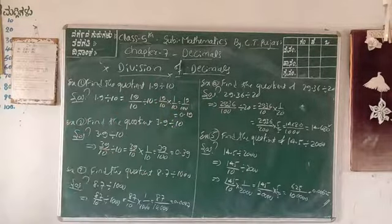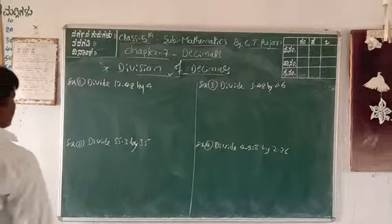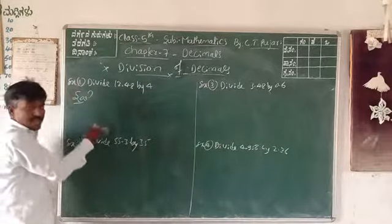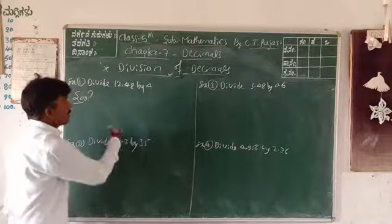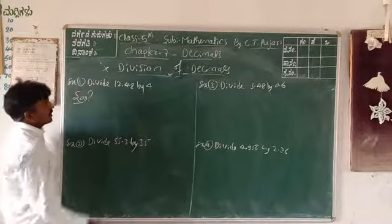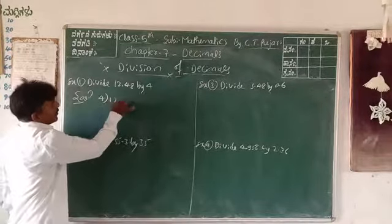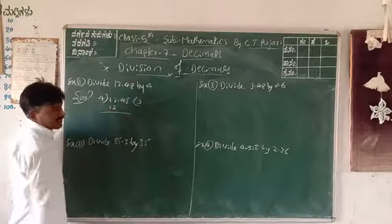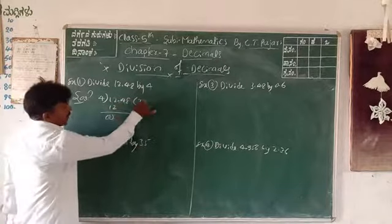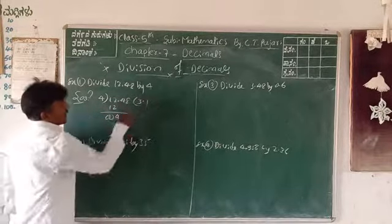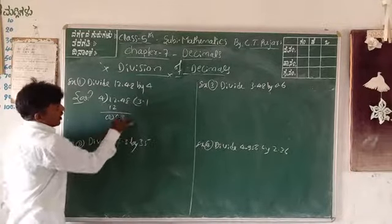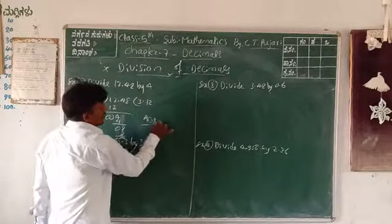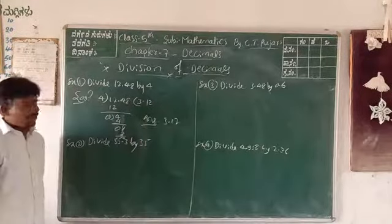Next: division of decimal number by whole number using long division. First example: 12.48 ÷ 4. Setting up long division: 4 into 12 = 3, remainder 0; bring down 4, 4 into 4 = 1; bring down 8, 4 into 8 = 2. Answer is 3.12.